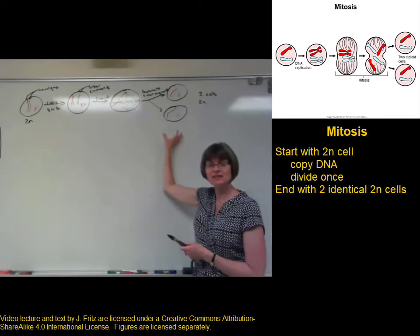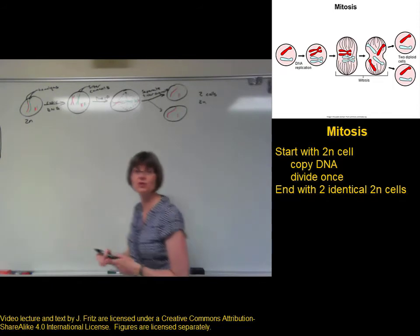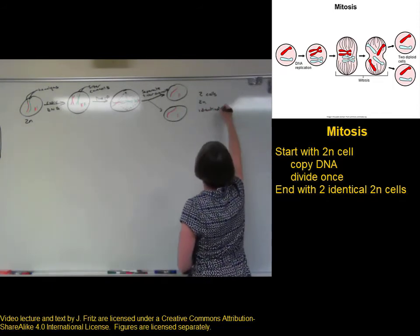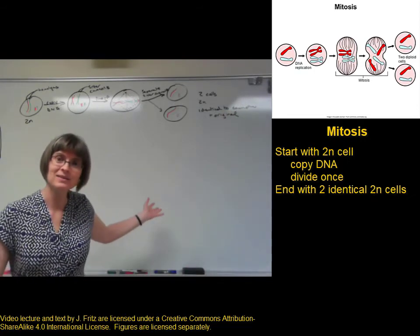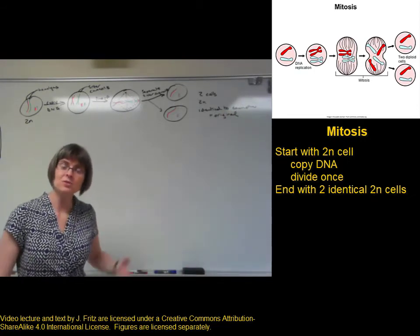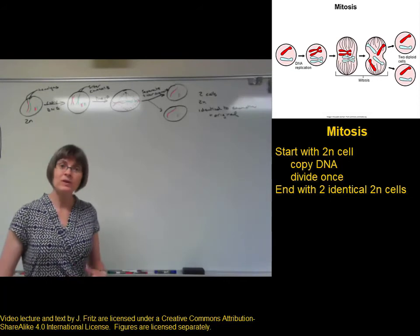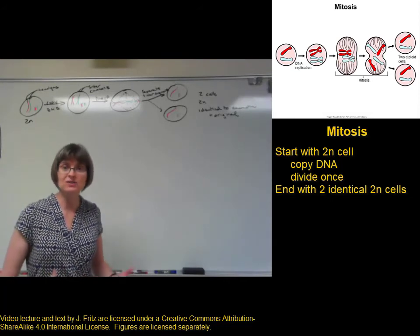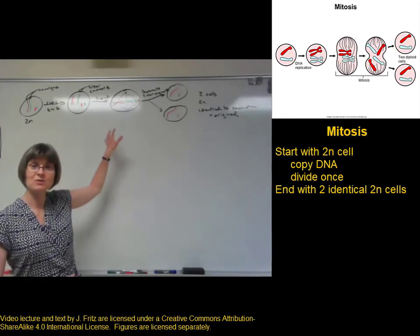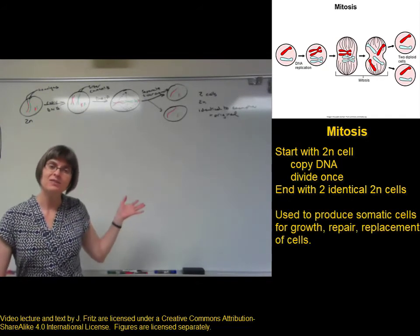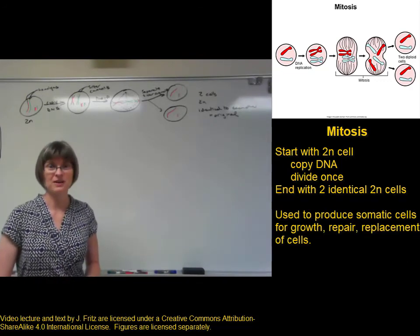These cells are genetically identical to each other and genetically identical to the original cell. This is the process that our cells use to make more cells whenever new cells are needed — when cells are dividing to make more erythrocytes, or when your stomach epithelial cells divide to replace cells that are damaged by stomach acid. This process of mitosis is the process that we use to heal, to grow, and to replace worn-out cells.